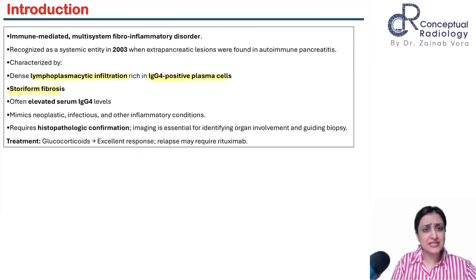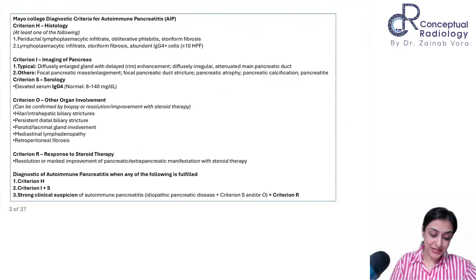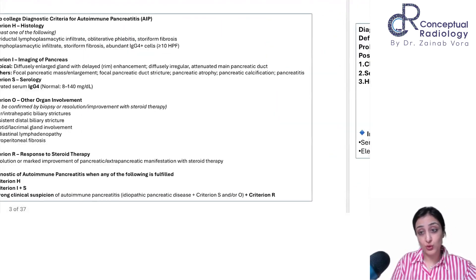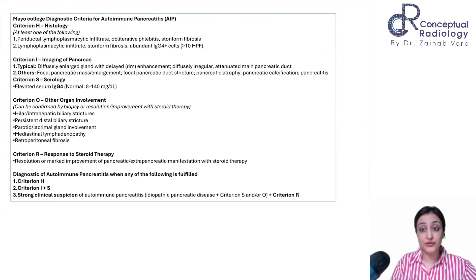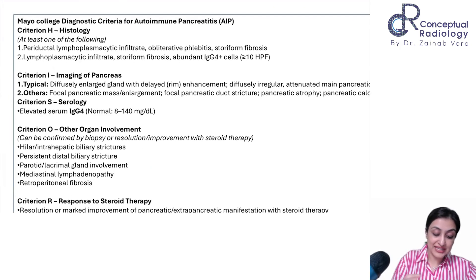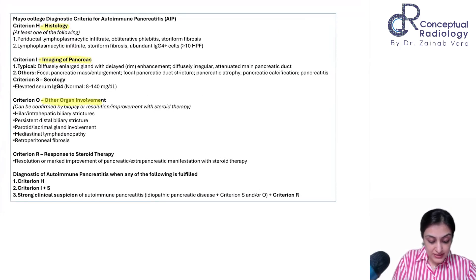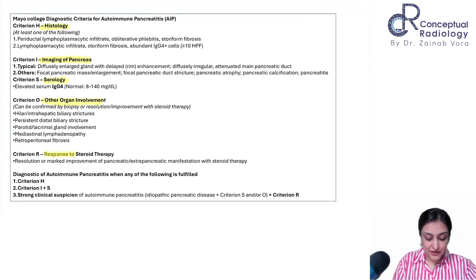There are two criteria commonly followed. You can use these for theory exams. The Mayo Clinic criteria, which is commonly followed, is called HISSOT: Histology, Imaging, Serology, Other organ involvement, and response to Steroid Therapy.